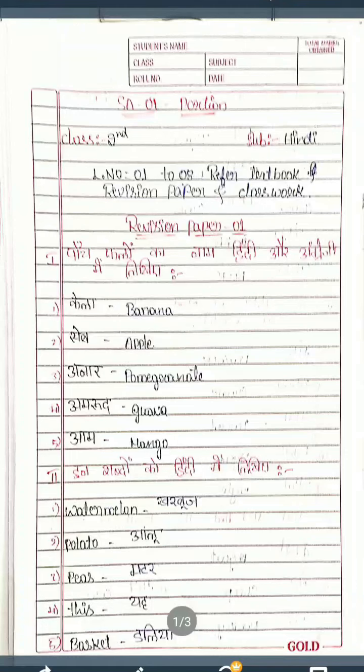Good morning students. Now I do second standard Hindi. So after two weeks, having SA1 exam children. That's why now I do revision for SA1 portions having four lessons — lesson number one to lesson number eight. So I have had textbook class for contribution papers. So that is revision paper one. Now I read and explain for all means — I'll have to listen carefully.